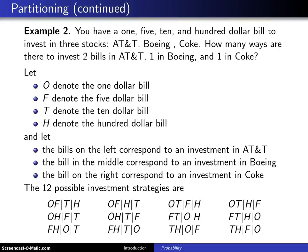We're going to generalize the simple poker hand example into one that's a little more complex. In this case we're going to enumerate. Example two: you have a one, five, ten, and hundred dollar bill to invest in three stocks. The three stocks are AT&T, Boeing, and Coke — I chose A, B, and C just to keep things simple — and we have the four different bills.